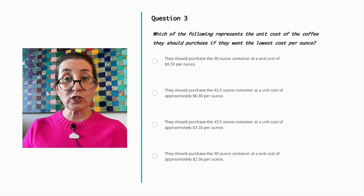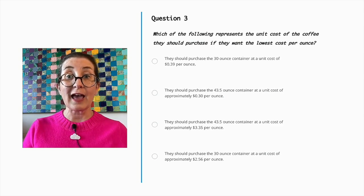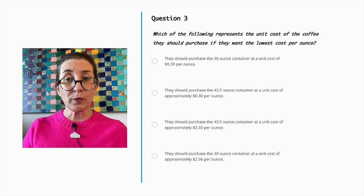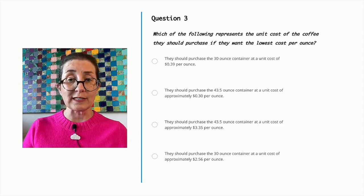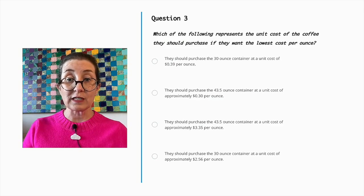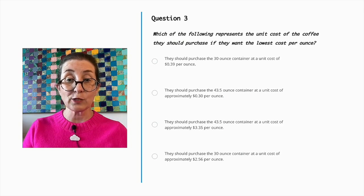They should purchase the 30-ounce container at a unit cost of $0.39 per ounce. Or, they should purchase the 43.5-ounce container at a unit cost of approximately $0.30 per ounce. Or, they should purchase the 30-ounce container at a unit cost of approximately $2.56 per ounce.